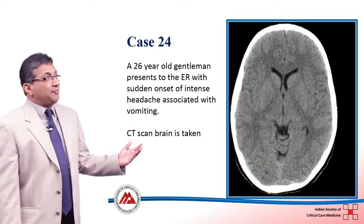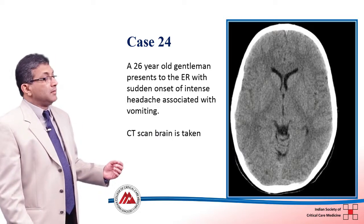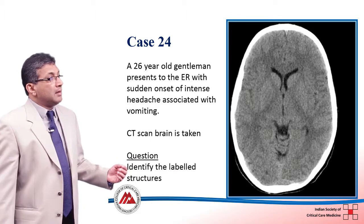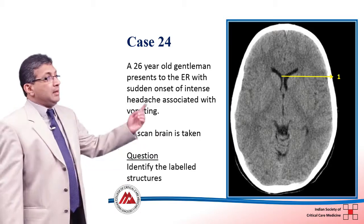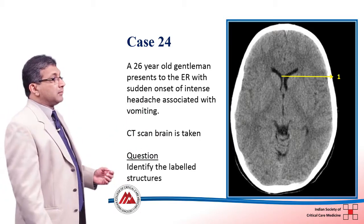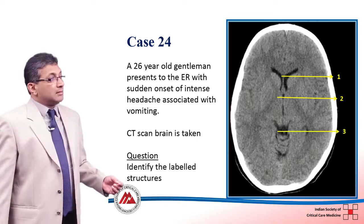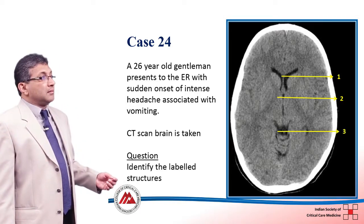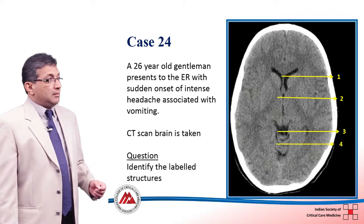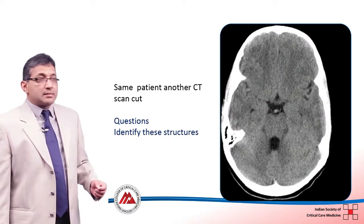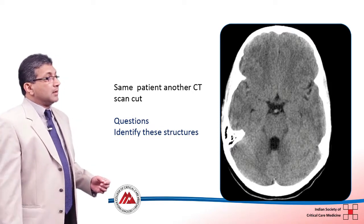Can you identify the parts of the brain? The structure numbered one is the anterior horn of the lateral ventricle. Number two is the third ventricle, which is part of the basal cistern. And that is the cerebellum vermis. Now look at this cut of the same patient — what are you seeing here? Can you identify the structures?